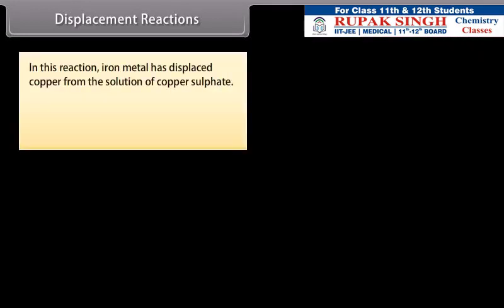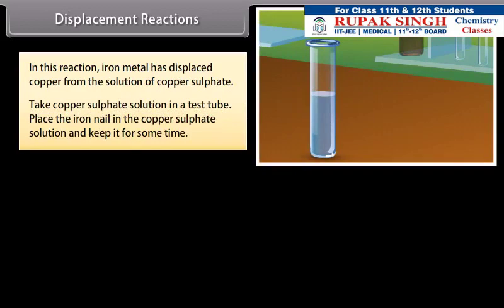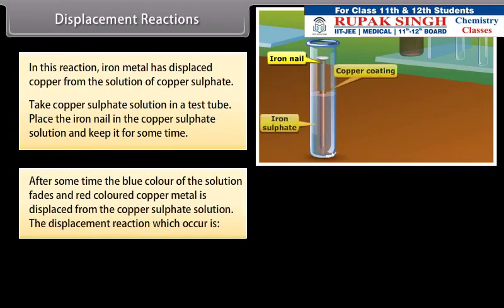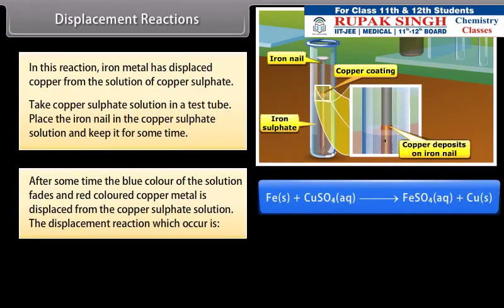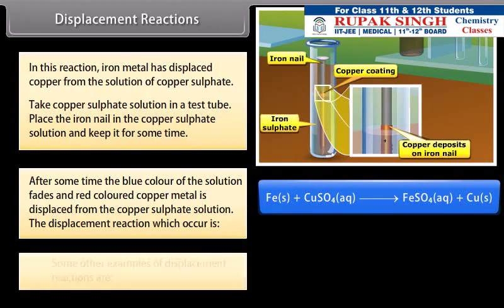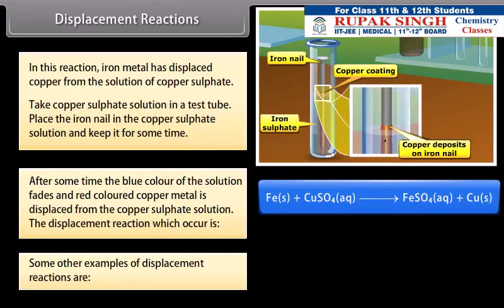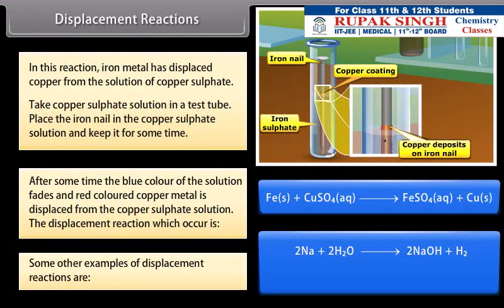In this reaction, iron metal has displaced copper from the solution of copper sulfate. Take copper sulfate solution in a test tube. Place the iron nail in the copper sulfate solution and keep it for some time. After some time, the blue color of the solution fades and red colored copper metal is displaced from the copper sulfate solution. The displacement reaction which occurs is Fe plus CuSO4 gives FeSO4 plus Cu. Some other examples of displacement reactions are 2Na plus 2H2O gives 2NaOH plus H2, and 2Al plus Fe2O3 gives Al2O3 plus 2Fe.